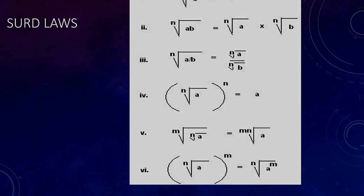So because surds are the opposite of exponents, and as we saw in the last exponent law it's just a number to the power of a fraction, the same rules apply for surds as those that apply for exponents. It may look different but I promise you it's not.